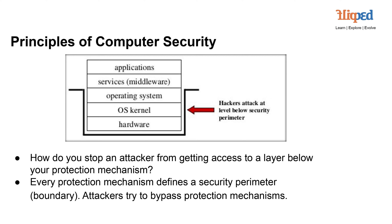An important question arises: how do you prevent attackers from accessing a layer beneath your protection mechanism? The answer lies in the concept of a security perimeter or boundary. Every protection mechanism establishes a security perimeter outlining the boundaries within which it operates. Unfortunately, attackers strive to find ways to bypass these protection mechanisms. Understanding the layers of a system and how attackers exploit vulnerabilities is key to building effective cybersecurity strategies.